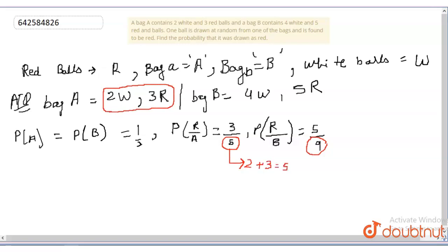And for this 9, that is 4 white balls plus 5 red balls equals 9. Now, we have got the equation according to the question.